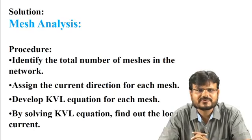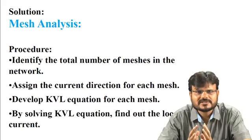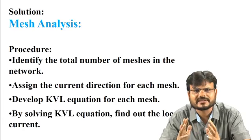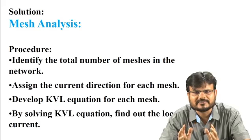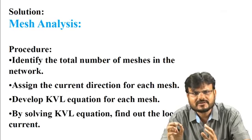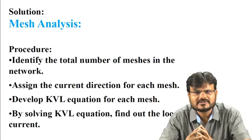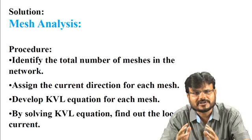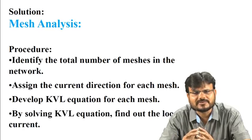First we are going to discuss mesh analysis. What are the steps? First, identify the number of meshes in the network. Suppose in this circuit there are three meshes — write mesh 1, mesh 2, mesh 3 — and assume the different mesh currents or loop currents. Second step: assign the current direction for each mesh, then develop KVL (Kirchhoff's voltage law) for each mesh, and by solving the KVL equation find out the loop current.